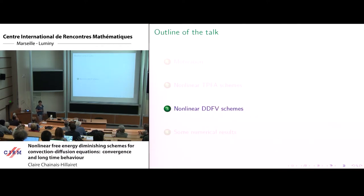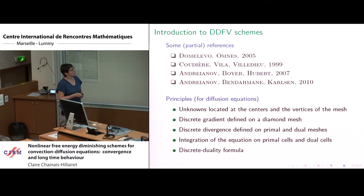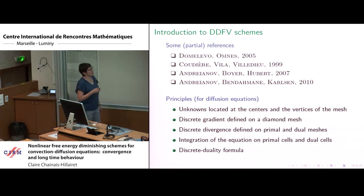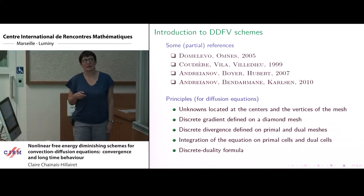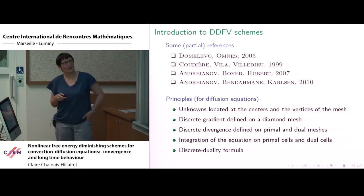Now I would like to apply the same kind of technique to write DDFV schemes, applicable to almost general meshes and for anisotropic equations. There are some experts of DDFV schemes here, but not everybody, so I first recall the principles of the DDFV scheme for diffusion equations. For these schemes, we have unknowns located at the centers and the vertices of the mesh, because with unknowns at centers and vertices it is possible to define a discrete gradient on a diamond mesh.